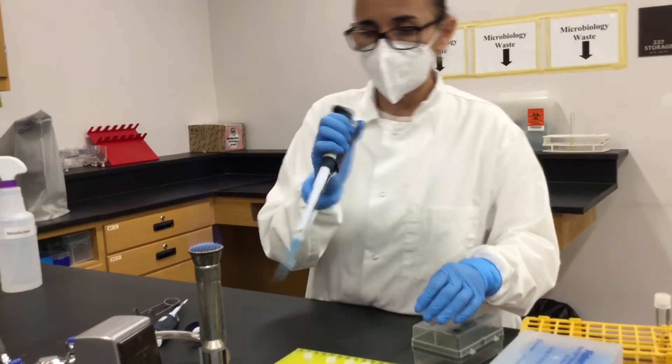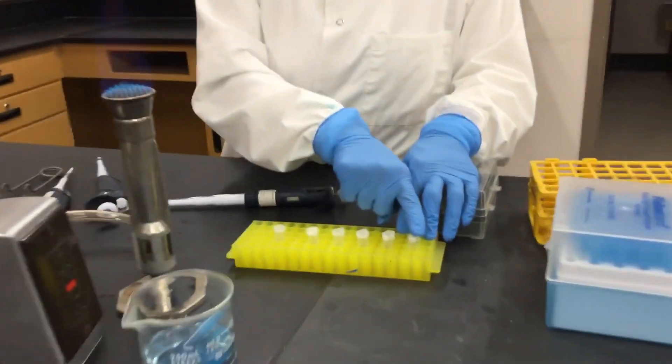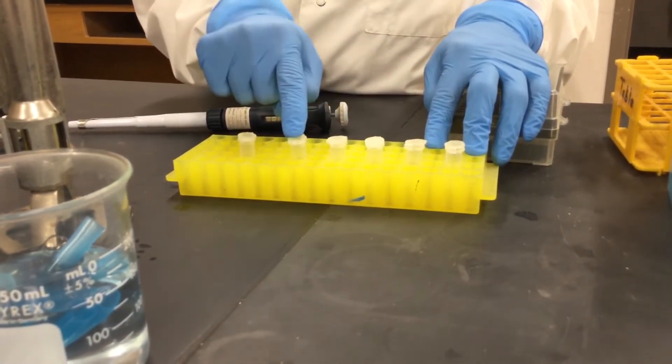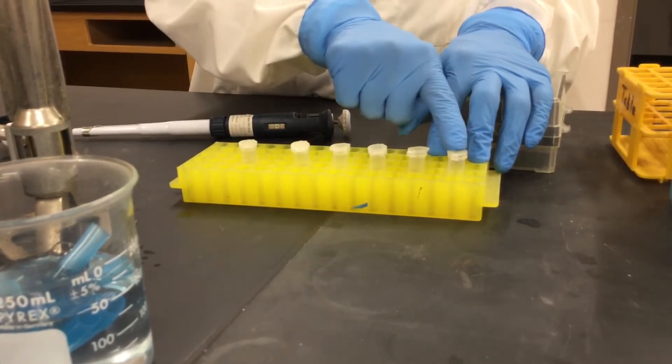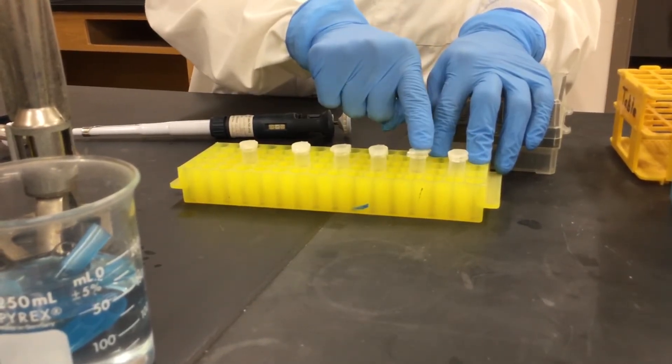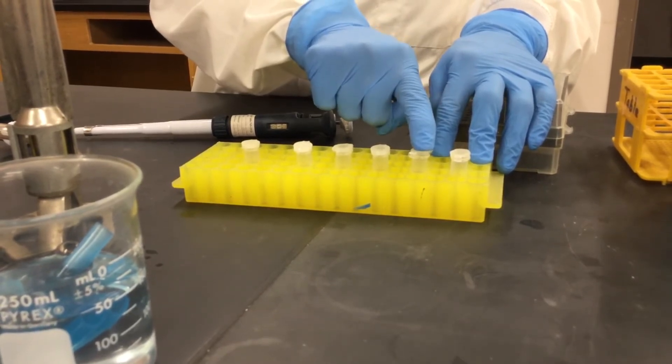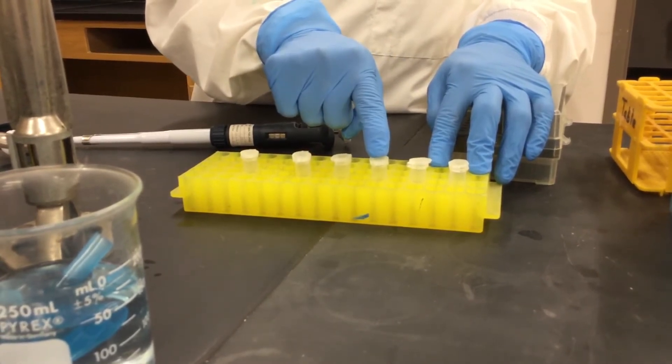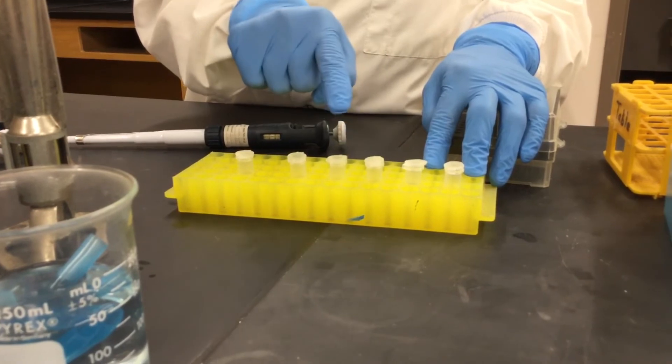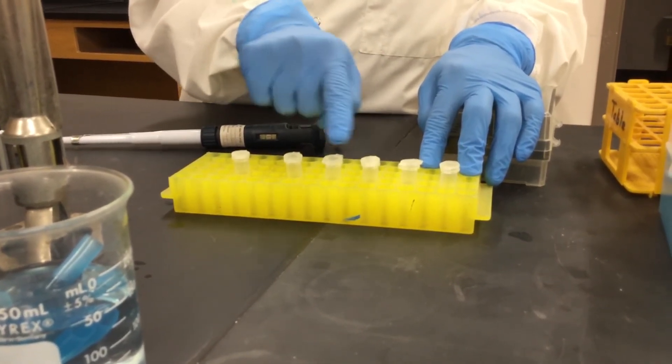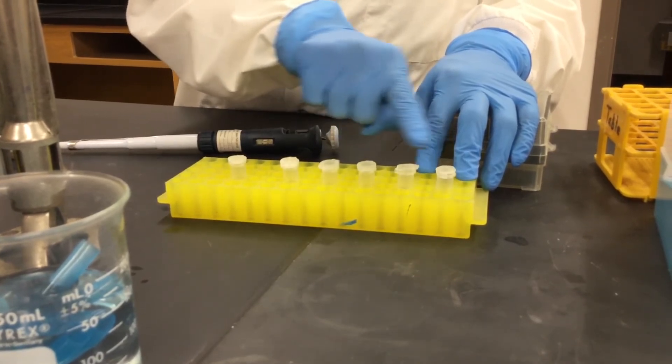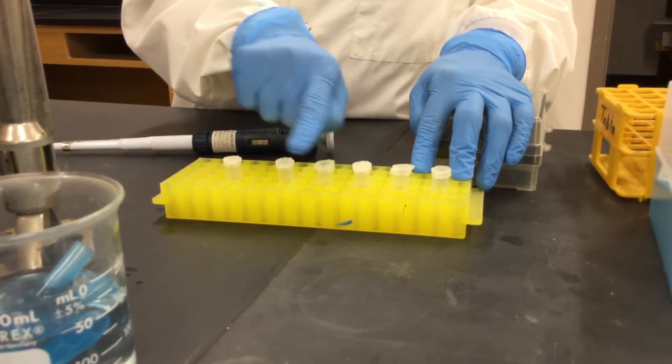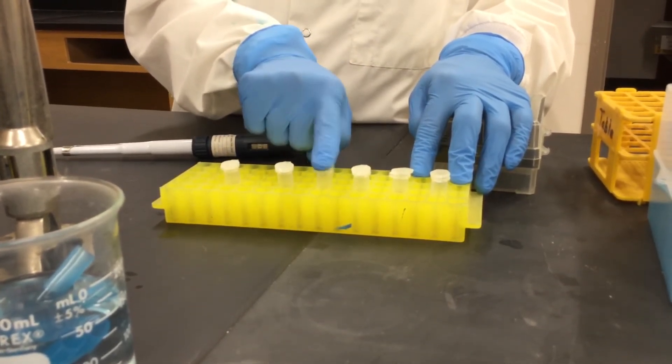So here this is what you have: this is original inoculum, this is 10 to the minus 2, 10 to the minus 4, 10 to the minus 5, 10 to the minus 6, 10 to the minus 7. So from here to here, transfer 10 microliters into 990 microliters of water, and then from here you transfer 100 microliters into 900 microliters of water. So in here you have jumped from 1 to 100 dilution into 1 to 10 dilution, and then this is going to be 10 to the minus 5, 10 to the minus 6, 10 to the minus 7, and then you keep transferring.